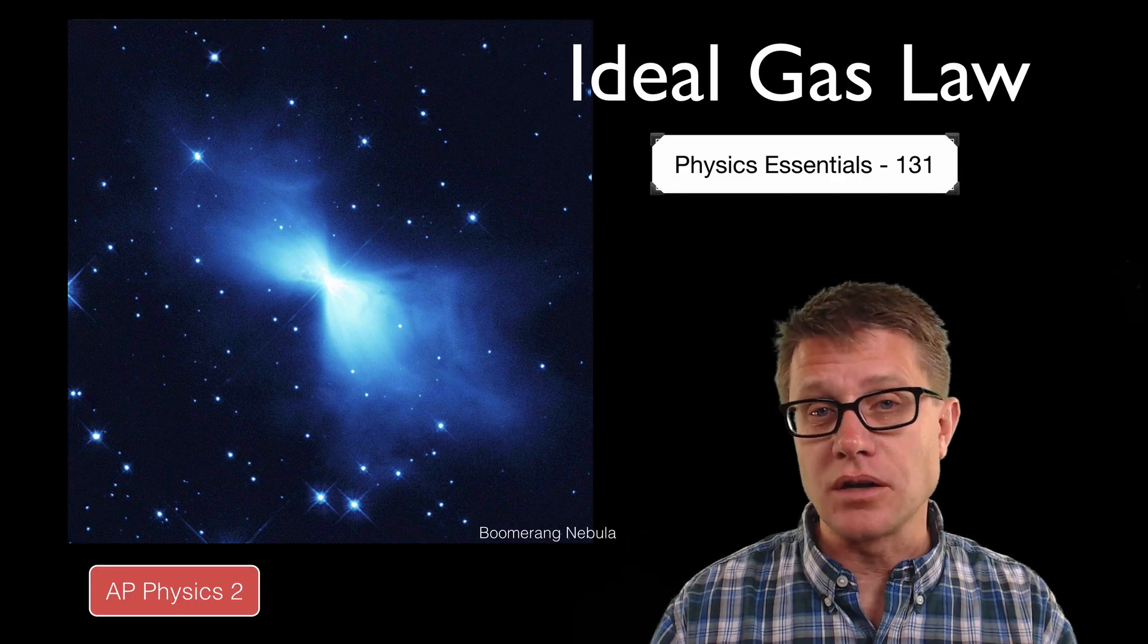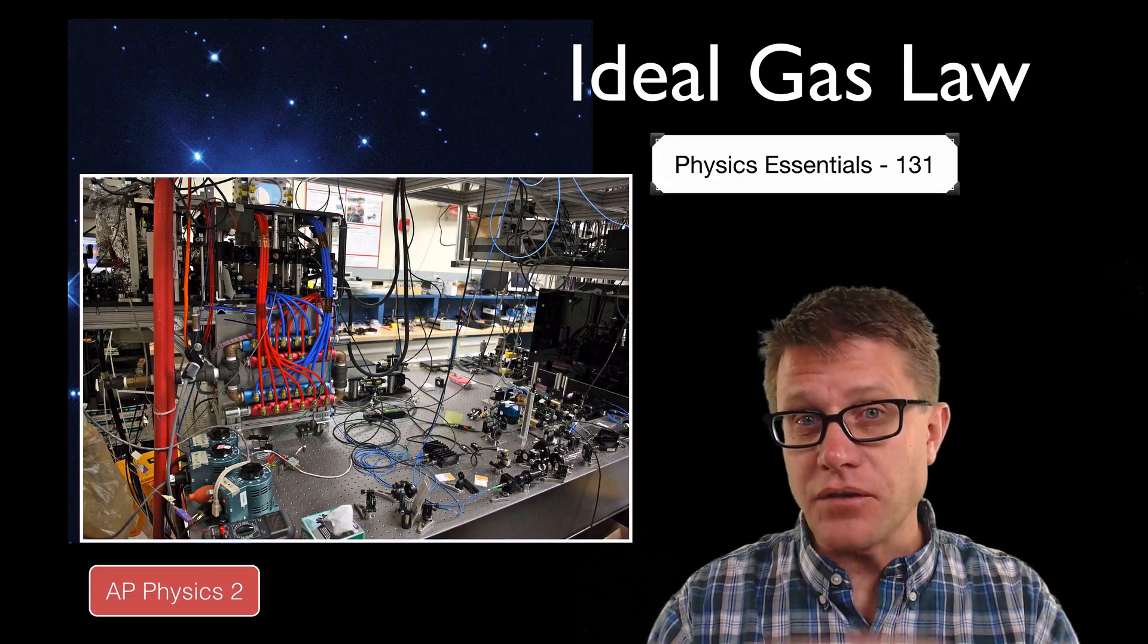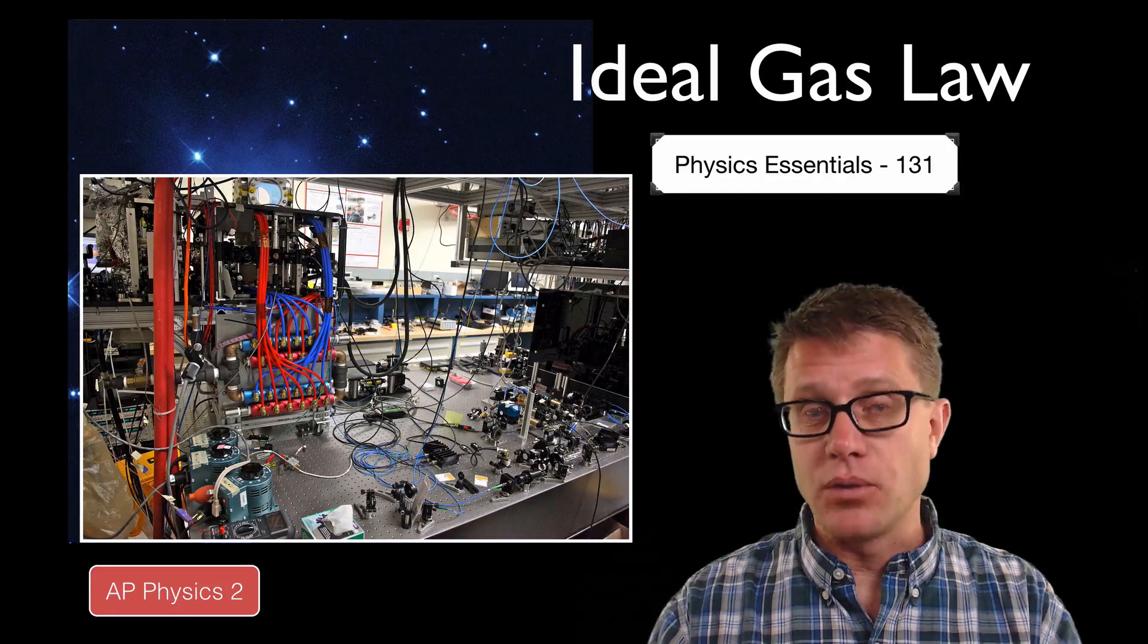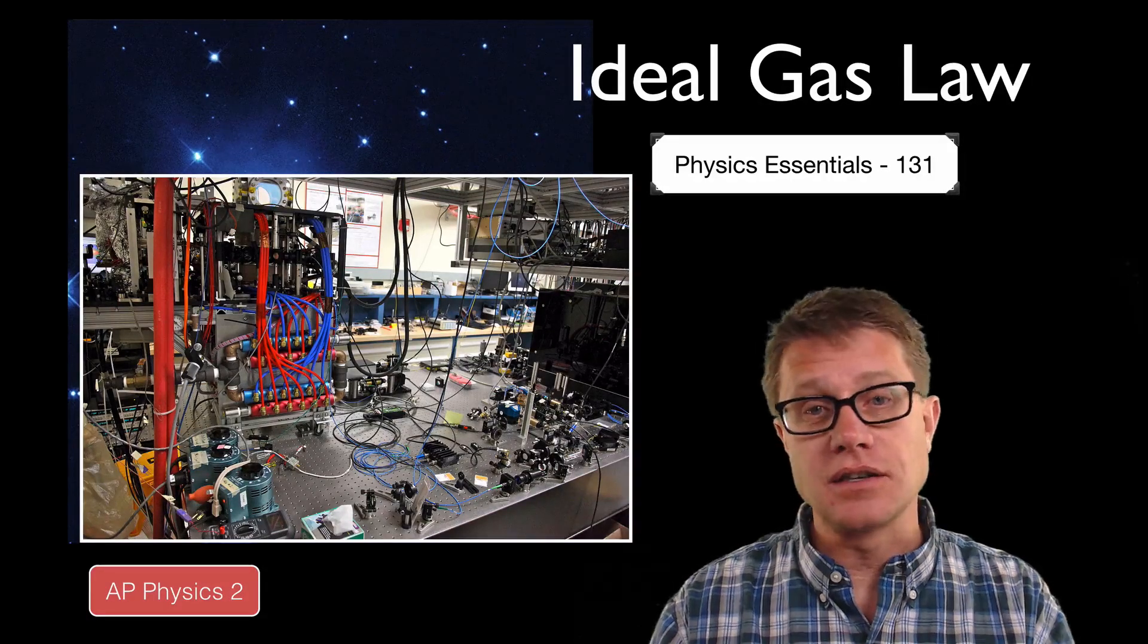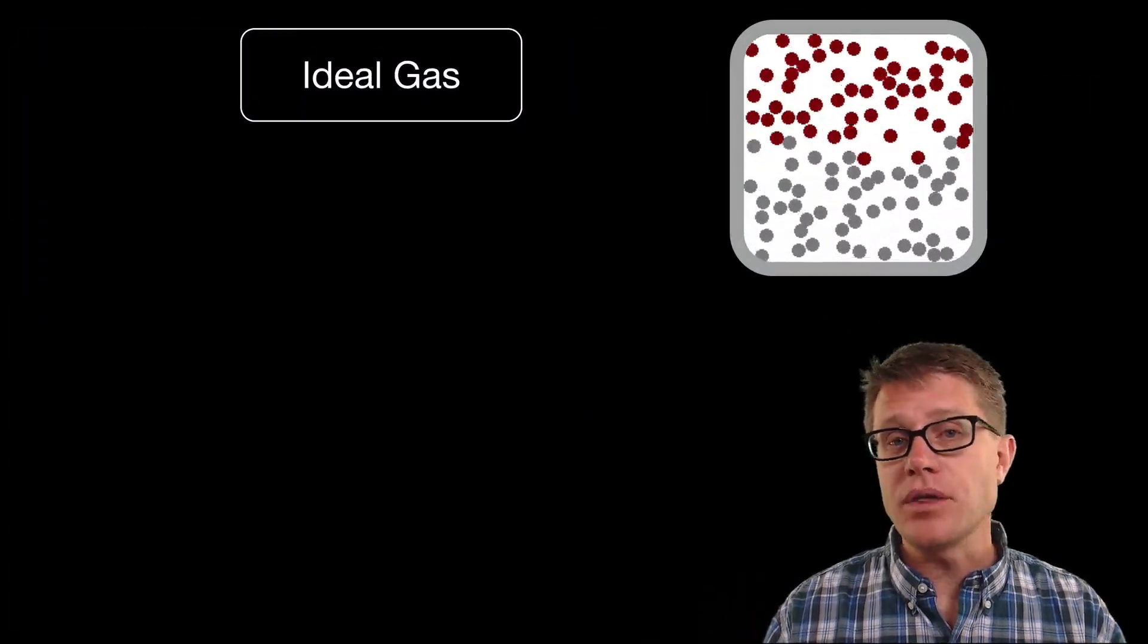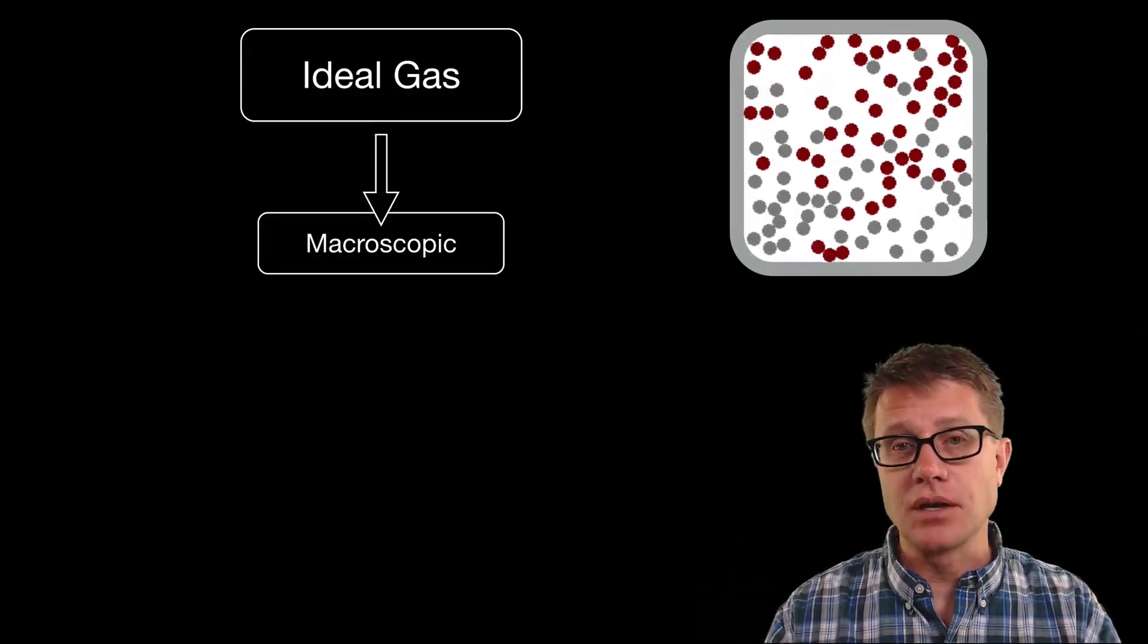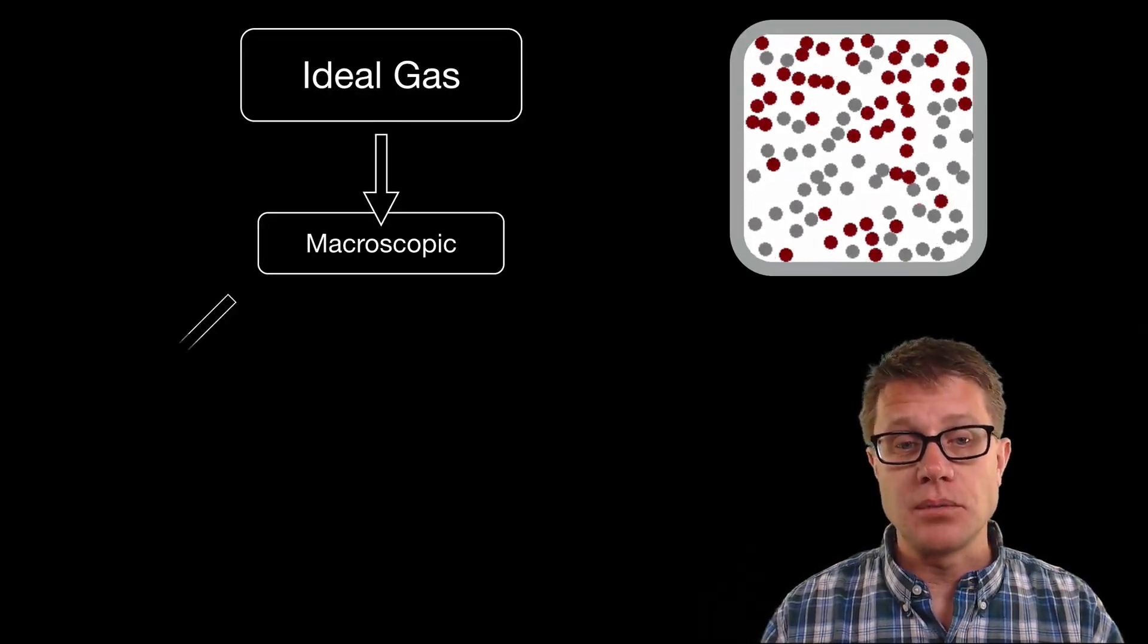In the boomerang nebula it is around one or two Kelvin. In laboratories we have gotten within fractions of a degree Kelvin by bombarding the matter with lasers on all sides to stop molecular motion. It starts to form a new state of matter. With a gas we have these molecules that are bouncing around and there are a number of macroscopic characteristics that we can measure in the laboratory.